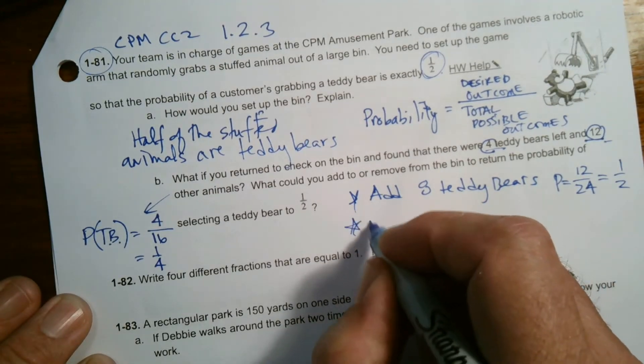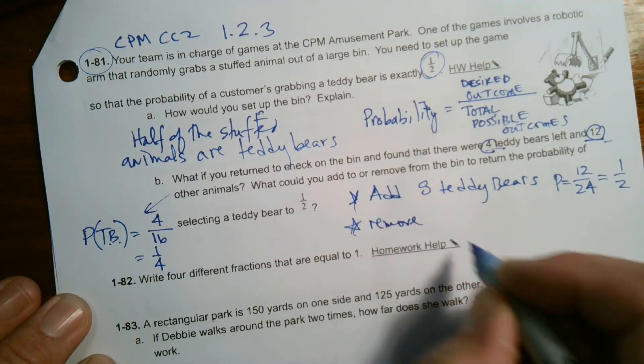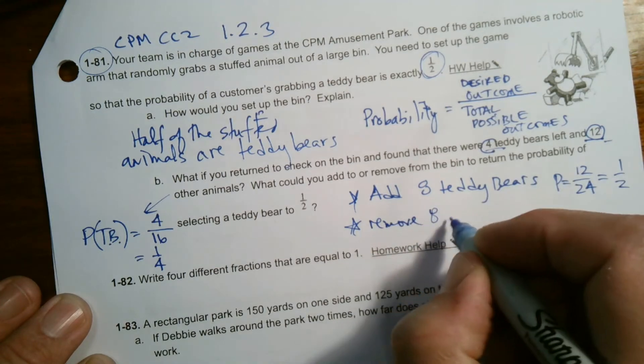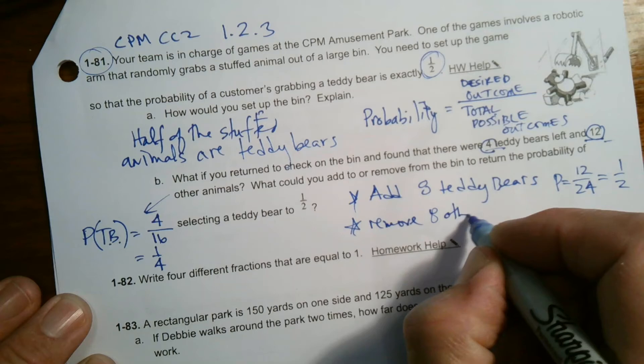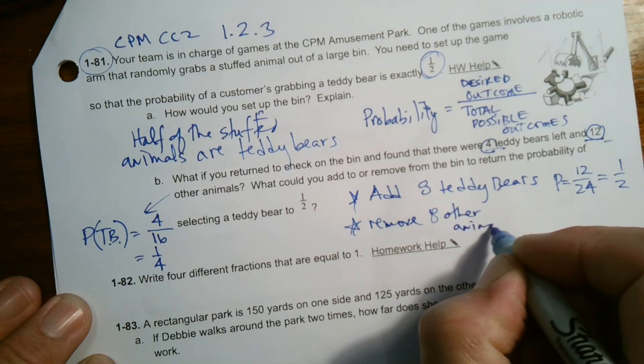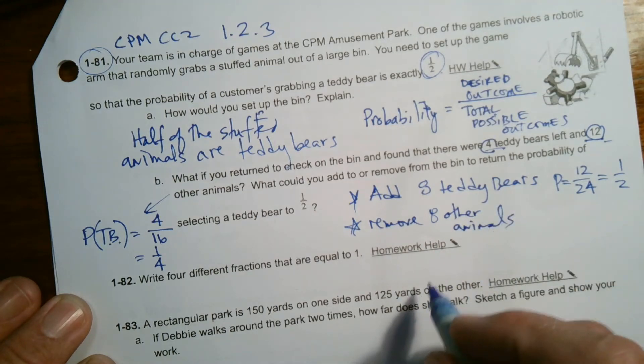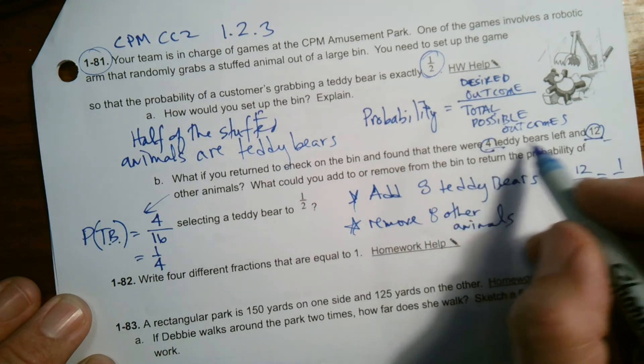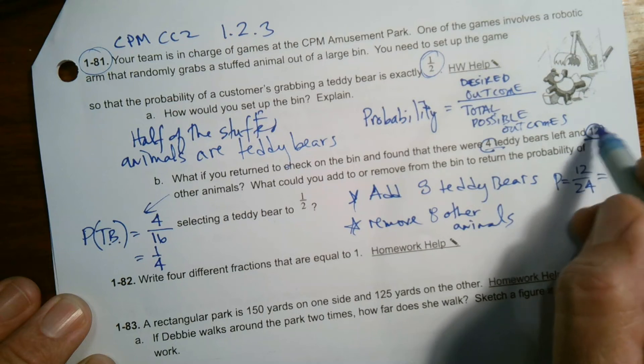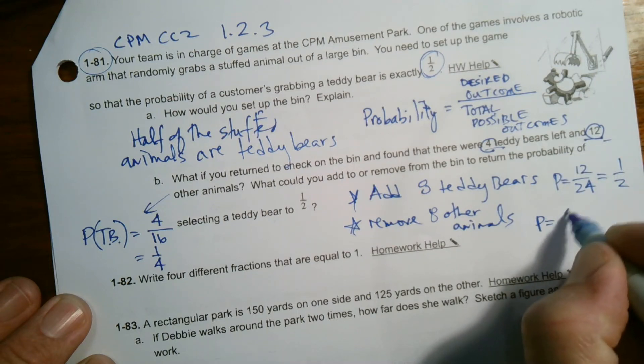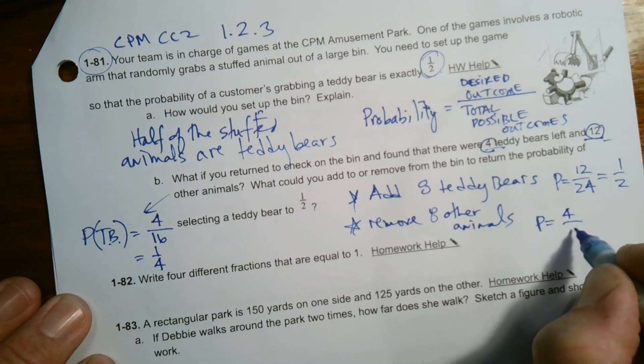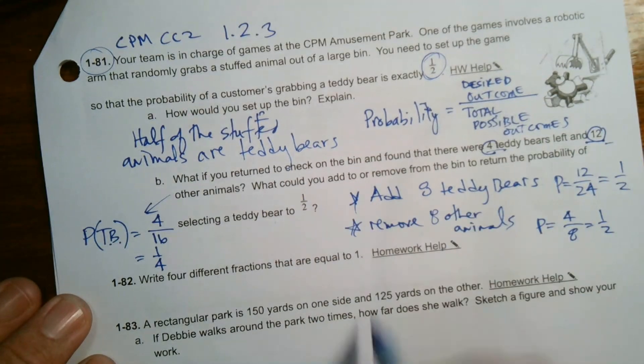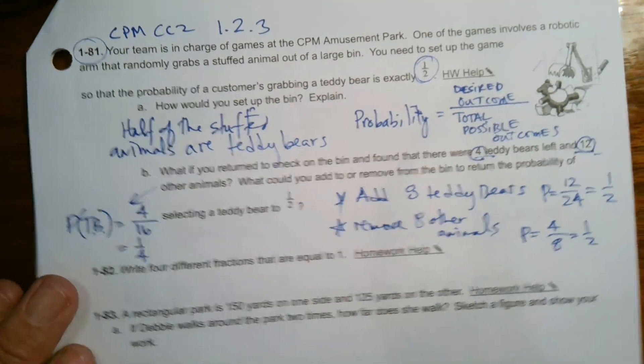Another option would be to remove eight other animals. If we're going to have less animals in there, we can remove eight other animals. Because then we would have four teddy bears and four other animals. And so the probability would be four over eight in this case, which is still one-half. So either one of those answers gets us there. All right, there you go.